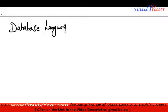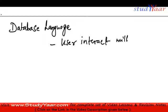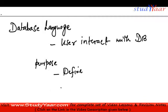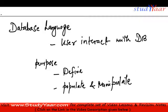Now next we will study the concept of database languages. Just like a normal language allows two or more people to interact with each other, we have a concept of database language which allows a user to interact with the database. The basic purpose of a database language has two purposes: one is to define the database, and another is to populate and manipulate the database.